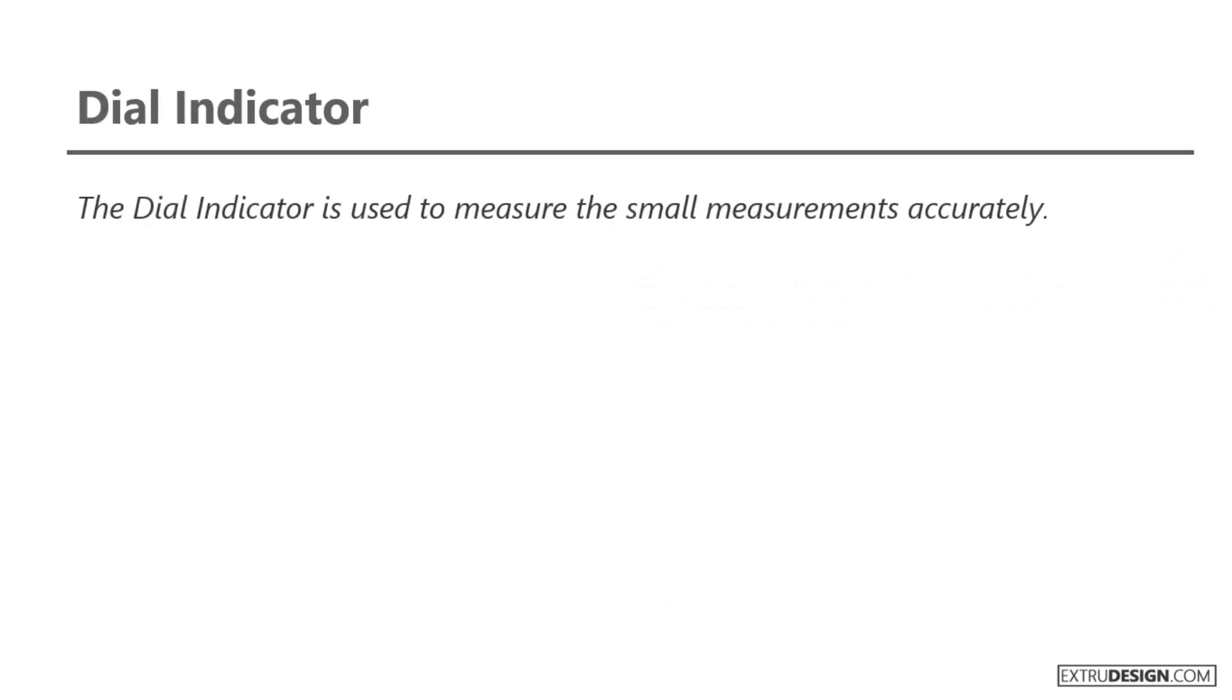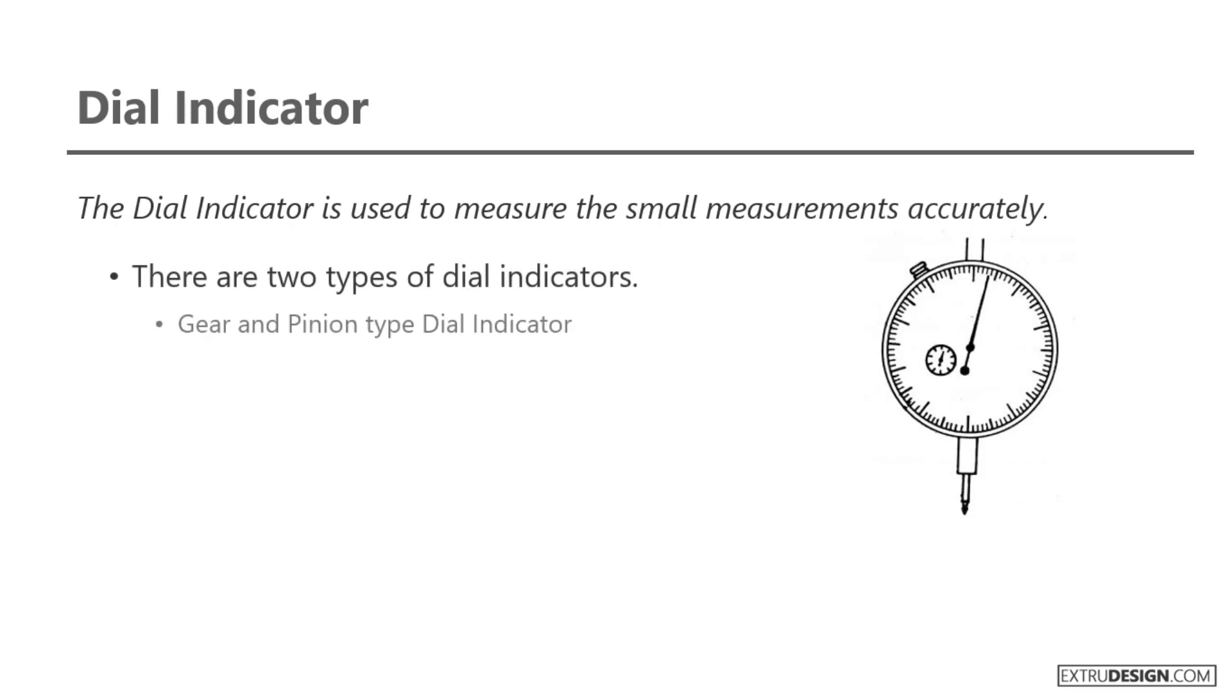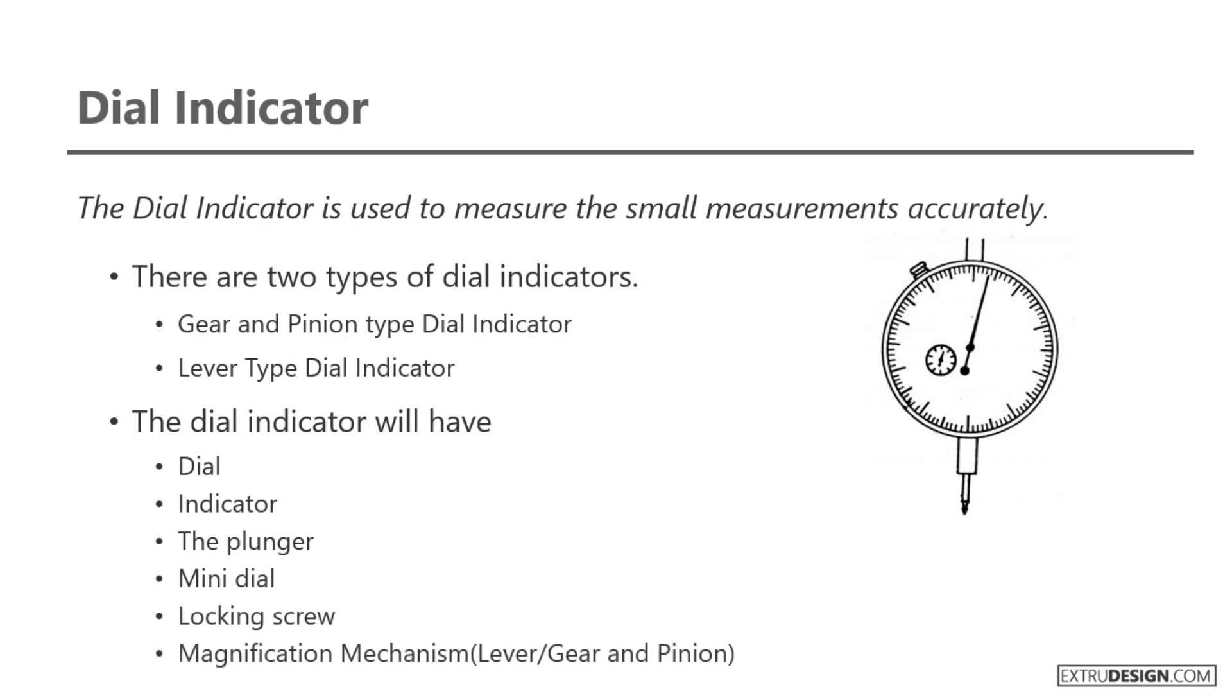Dial indicator. The dial indicator is used to measure small measurements accurately. There are two types of dial indicators: gear and pinion type dial indicator and lever type dial indicator. The dial indicator will have the following parts: dial, indicator, plunger, mini dial, locking screw, and a magnification mechanism such as lever or gear and pinion mechanisms. To know more about the dial indicator, check the link in the description.